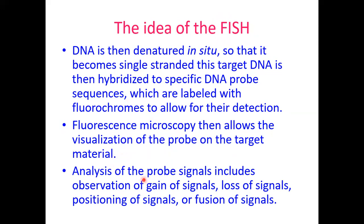The most important thing here is what we observe: gain of signals, meaning the gene or sequence is present; or loss of signals, meaning the sequence, gene, or chromosome is absent; or positioning of signals — sometimes there is a deletion or translocation, where the chromosome or gene has moved from its normal location to another location.